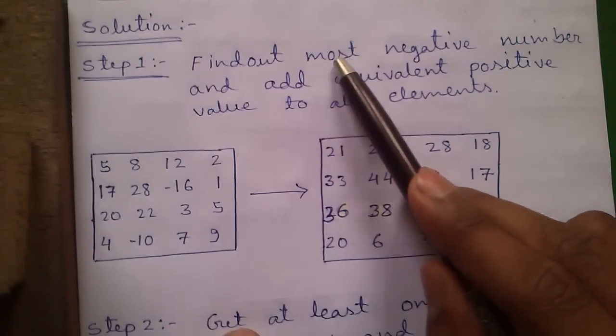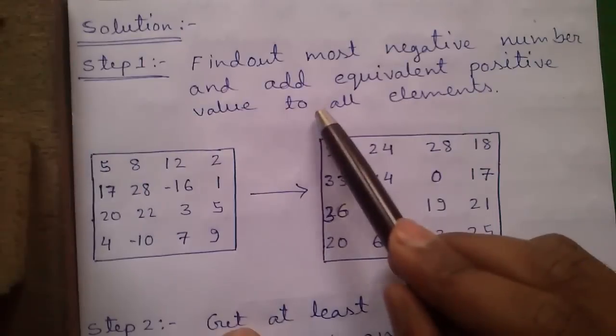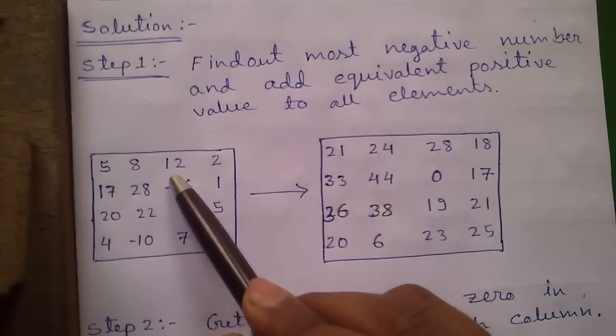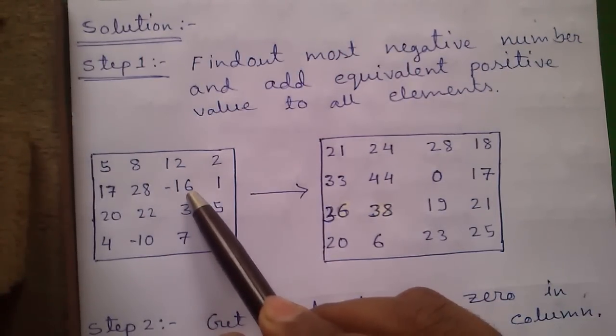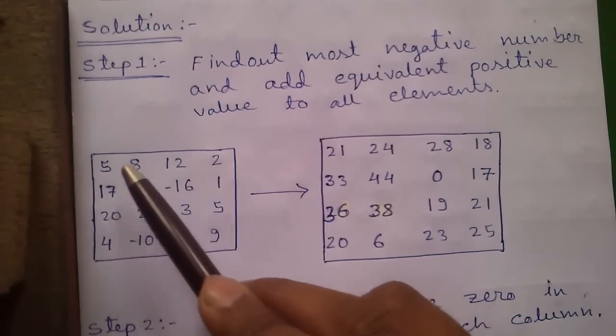Step 1: Find out the most negative number and add equivalent positive value to all elements. Here the most negative number is minus 16. We will add positive 16 or equivalent positive value to all the elements.